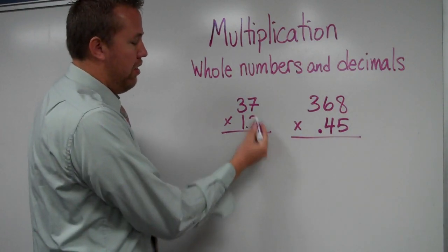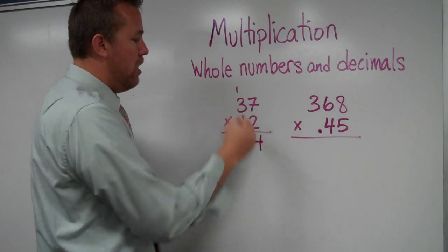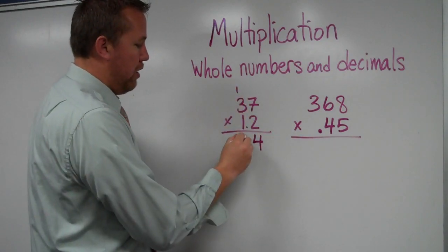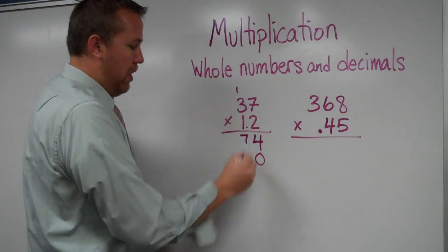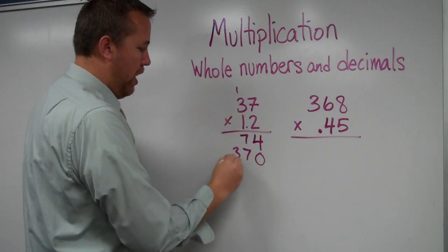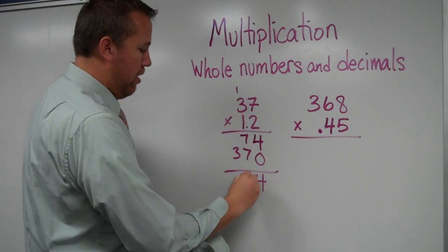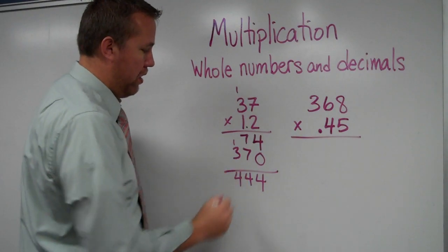So we start off just like in the algorithm. 2 times 7 is 14. Here's the 1, 2 times 3 is 6, plus 1 is 7. Zero, exact same thing. 7, 3, add them together. So that one works out nicely.